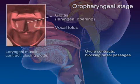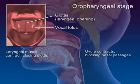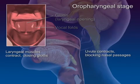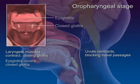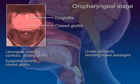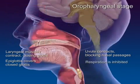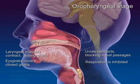The laryngeal muscles contract, closing the glottis at the top of the trachea by tightly aligning the vocal folds. The epiglottis swings down upon the closed glottis. With all airways blocked off, respiration is temporarily inhibited.